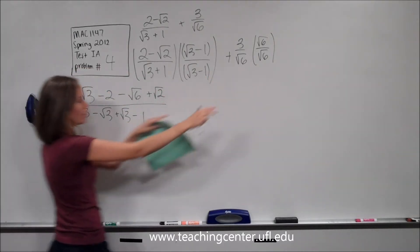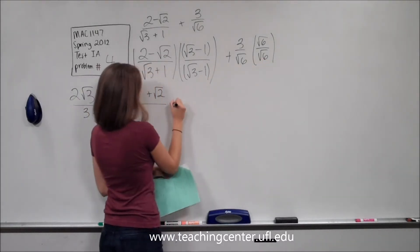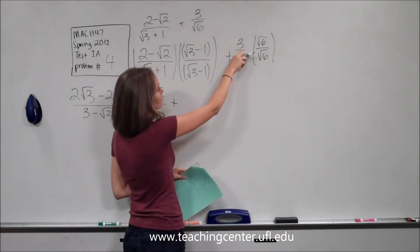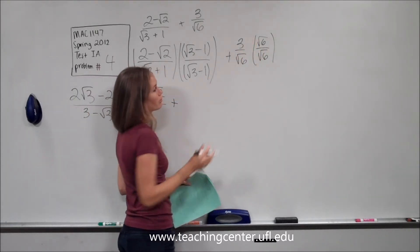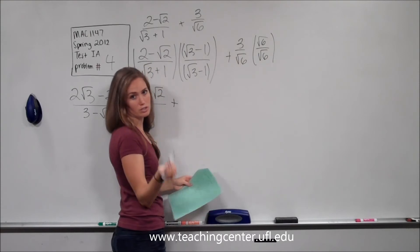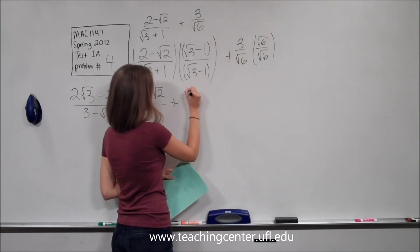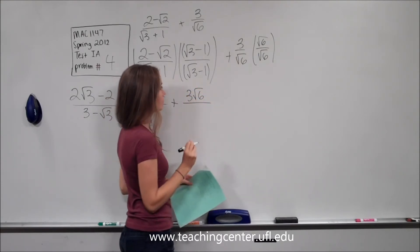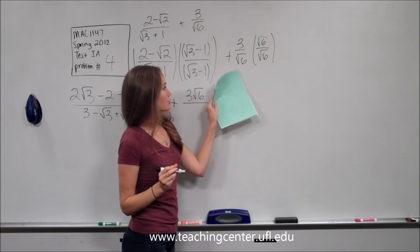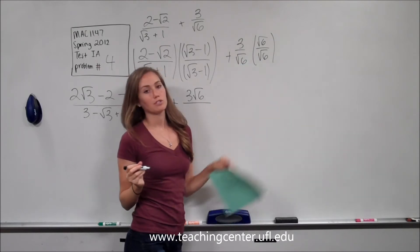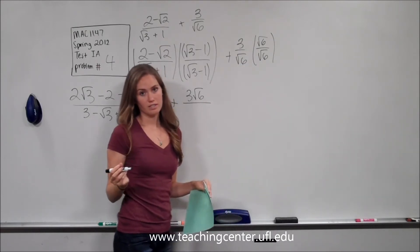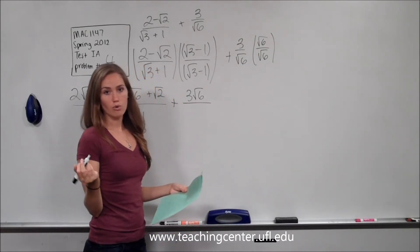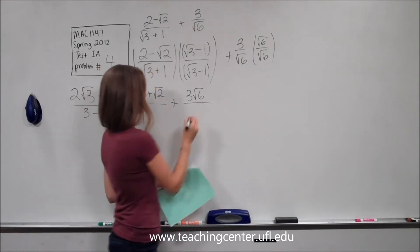Now we have to do the second term. We have 3 times square root of 6 — that's just 3 root 6 when you multiply them together in the numerator. And then square root of 6 times square root of 6 — the square roots cancel, so we're just left with 6 in the denominator.